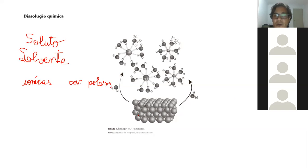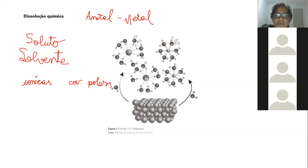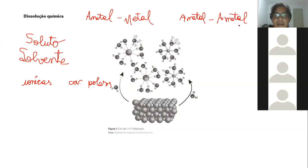Quando eu tenho uma molécula iônica? Geralmente, quando eu tenho um ametal ligado com um metal. Então eu tenho uma ligação iônica. Quando eu tenho uma ligação covalente, quando eu tenho ametal ligado com ametal, ou ametal-hidrogênio. Por que na ligação iônica eu tenho uma coisa muito polar? Porque o metal quer doar elétrons, e o ametal quer ganhar elétrons.